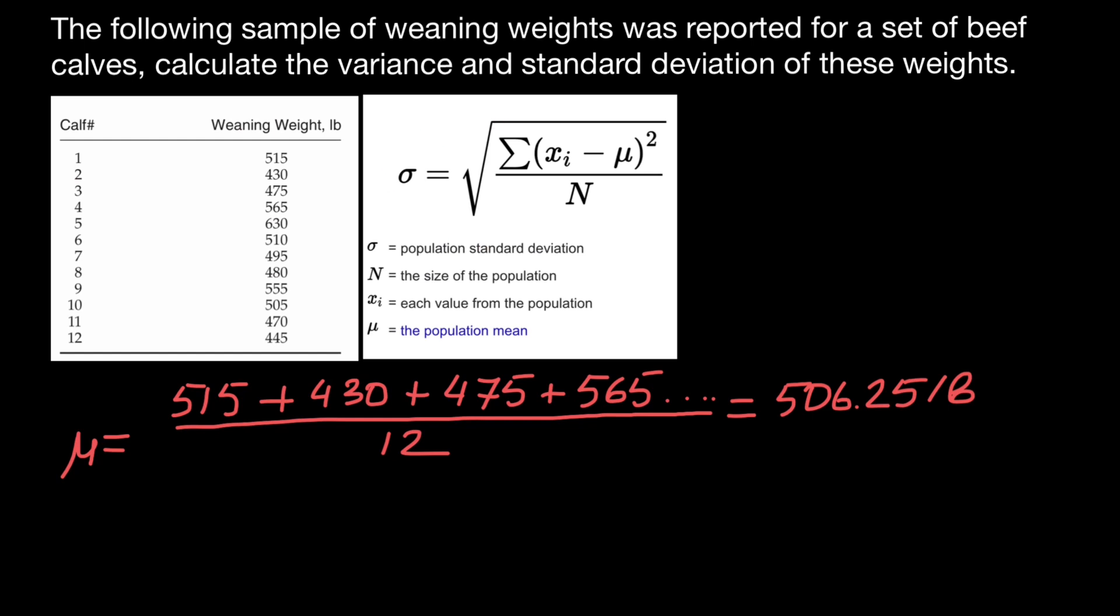Now I'm going to slightly modify this formula. We're going to find variance, so variance is sigma squared. Variance would equal the sum of the square difference between data set minus mean of the population. For example, first animal weighs 515 pounds minus mean of the population, which we found to be 506.25, squared, plus second animal 430 pounds minus 506.25, also squared. We have to repeat this with every number in the data set.